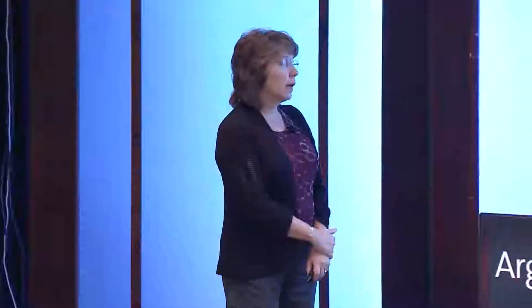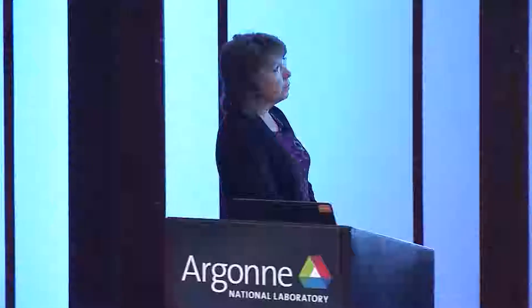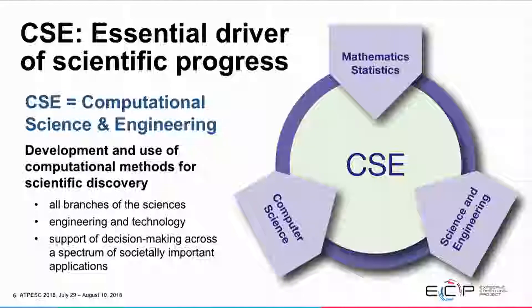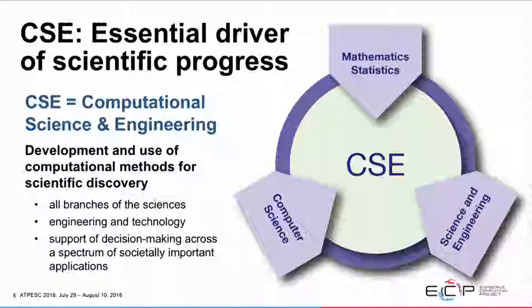Computational science and engineering is a pillar of science today, comprised of three primary components: the mathematics and statistics needed to develop the models; the computer science necessary to deploy those algorithms and models effectively on high-performance computing systems; and the application knowledge — the science and engineering knowledge needed to understand the results of those simulations and how to interpret them. This is being increasingly used in all branches of science, not just physical sciences, but increasingly in the humanities and other areas as well.